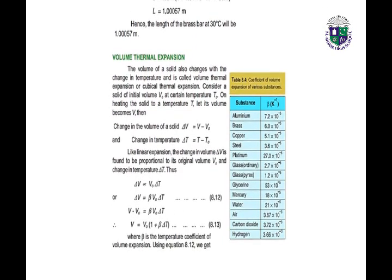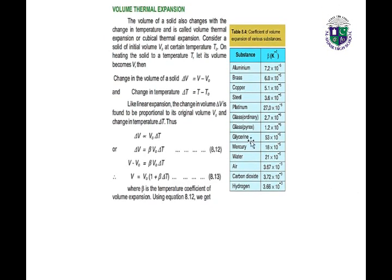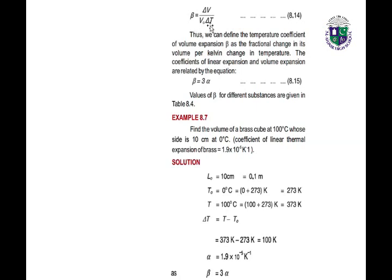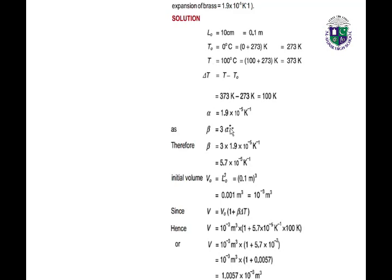For volume thermal expansion, volume also increases with an increase in temperature. The change in volume of a solid is directly proportional to the original volume times the change in temperature. We introduce beta — the coefficient of volume expansion — with the formula: beta equals change in volume over (original volume times change in temperature). Beta is defined as the fractional change in volume per Kelvin change in temperature. Example 8.7 shows how to calculate the value of beta by substituting all given values.